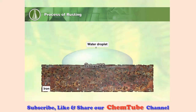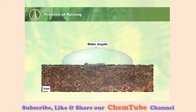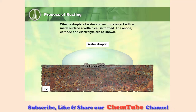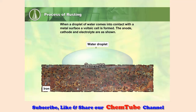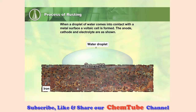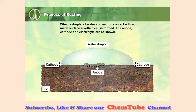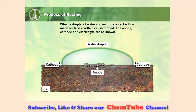Look at this water droplet on this piece of iron. This droplet of water on this piece of metal forms a voltage cell, meaning it has an anode, cathode, and an electrolyte.